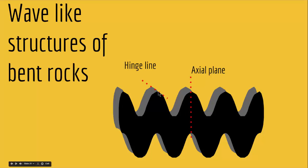So if you have a hinge line here and another strata with a hinge line there, the axial plane is the plane that connects all those hinge lines and roughly divides the fold into two equal limbs.